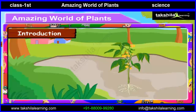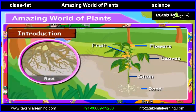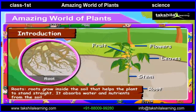As we have studied earlier, a plant has 5 main parts. Roots grow inside the soil that helps the plant to stand straight. It absorbs water and nutrients from the soil.